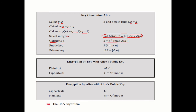The public key is E and n. The private key is D and n. The plaintext M must be less than n. The ciphertext is C = M^E mod n, and decryption gives M = C^D mod n.